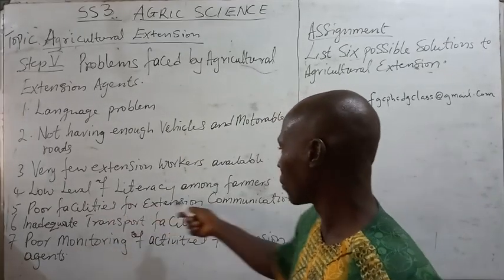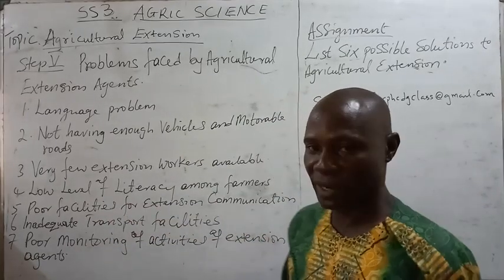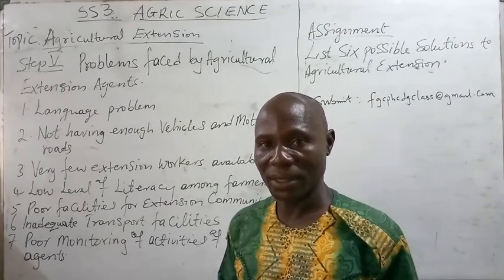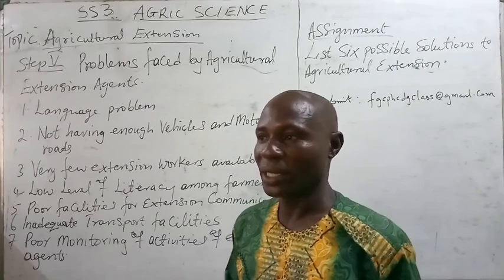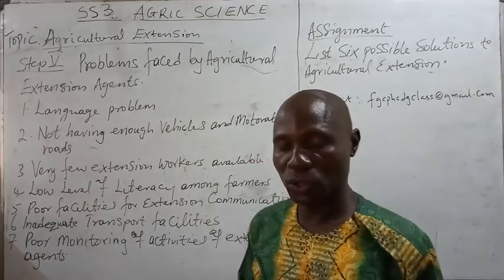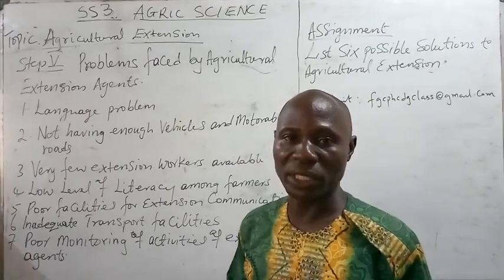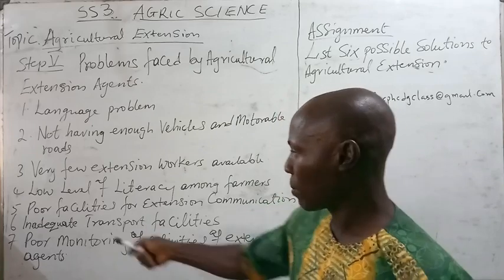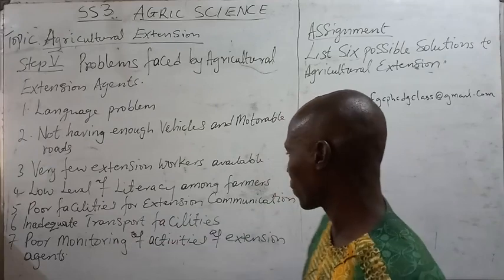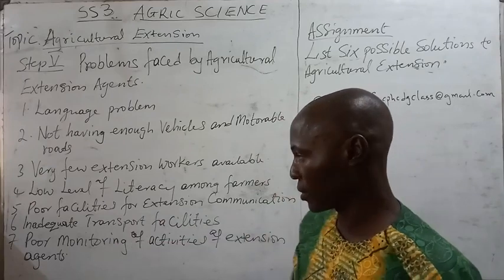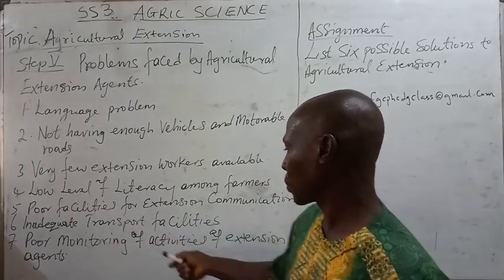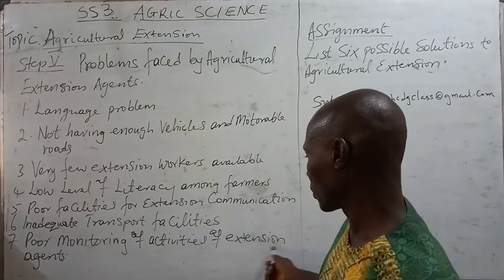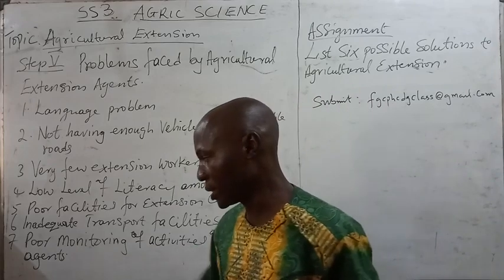Four, low level of literacy among farmers — most farmers are illiterate and find it difficult to communicate with the extension agent. Five, poor facilities for extension communication. Six, inadequate transport facilities. Seven, poor monitoring of the activities of extension agents.